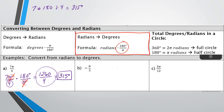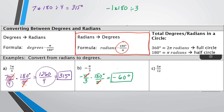Next: negative π over 3. Again, the negative doesn't complicate things — it just means the degree answer will also be negative. Multiply negative π/3 by 180/π. The pi's cancel. In the calculator, do negative 1 times 180 divided by 3, which gives negative 60. So negative π/3 radians is equivalent to negative 60 degrees.